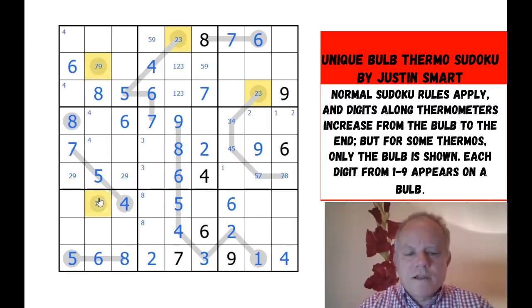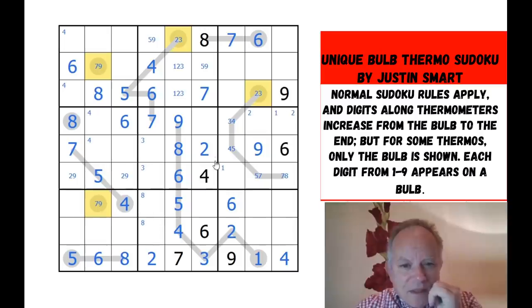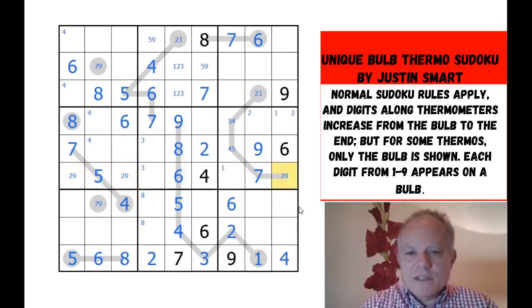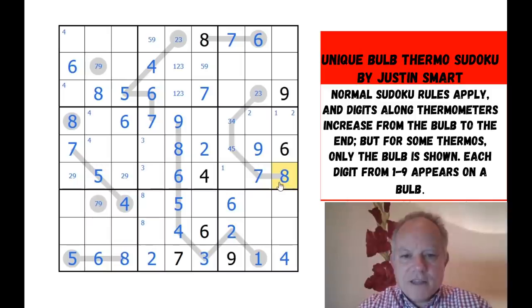We've got four bulbs left to disambiguate. That must be possible soon, I would think. What am I missing here? Two, nine, five. They haven't... Oh, that five. That has sorted out the end of this thermometer at least. Seven and eight there. That's fine.